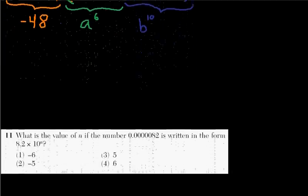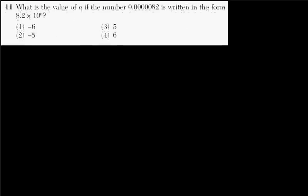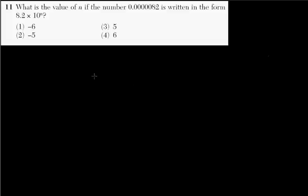Let's go on to problem number 11. It says, what is the value of n if the number .0000, oh my, there's a lot of zeros here, is written in the form 8.2 times 10 to the n. This is a scientific notation problem. So basically, since we have a decimal, n is going to be negative. So we can immediately cut these two guys out because this number is smaller than one.